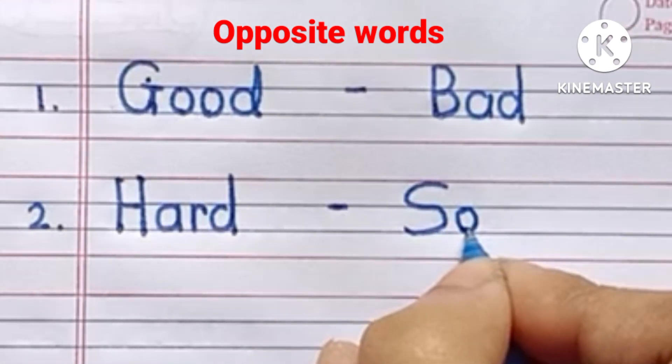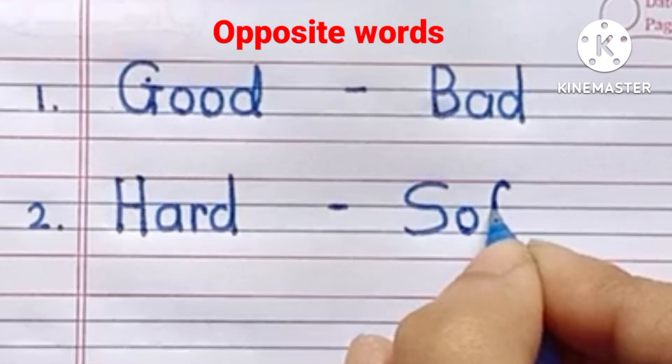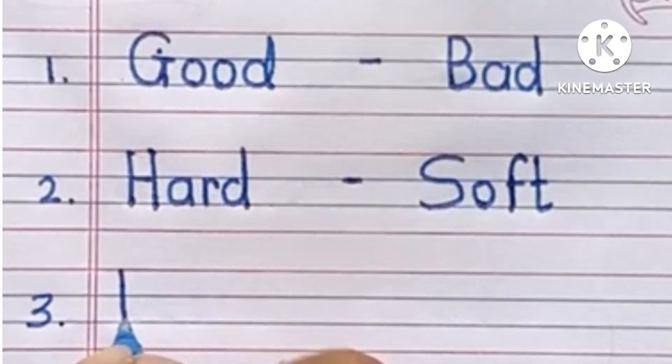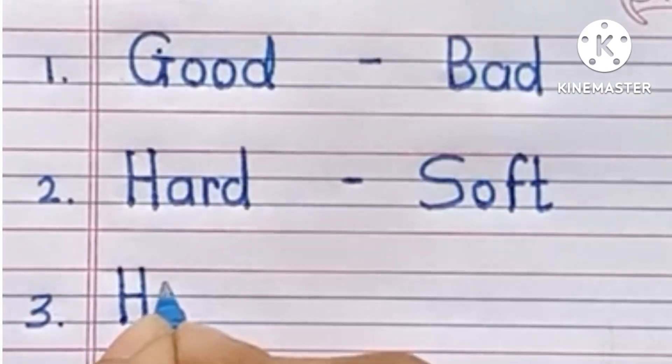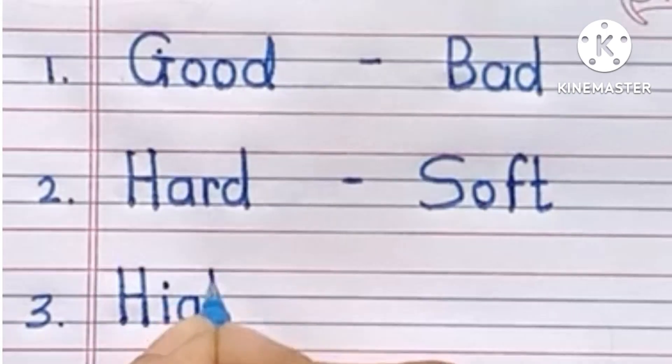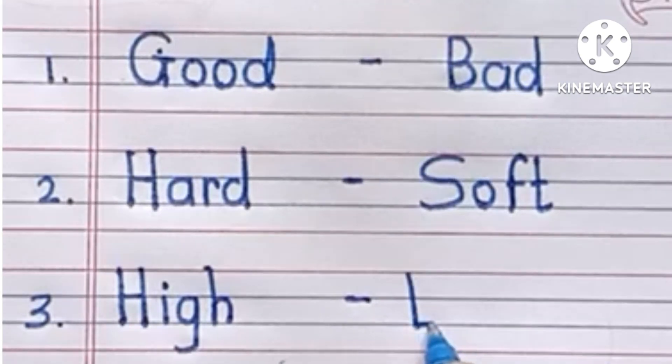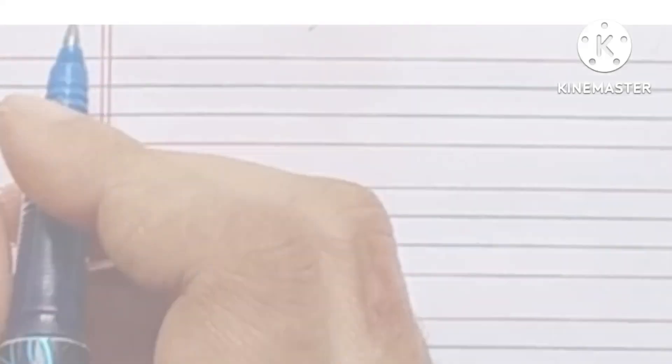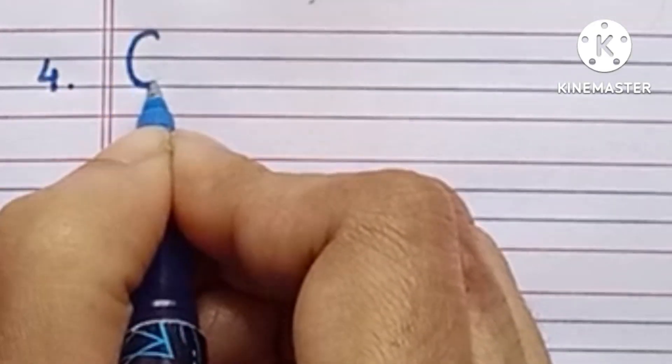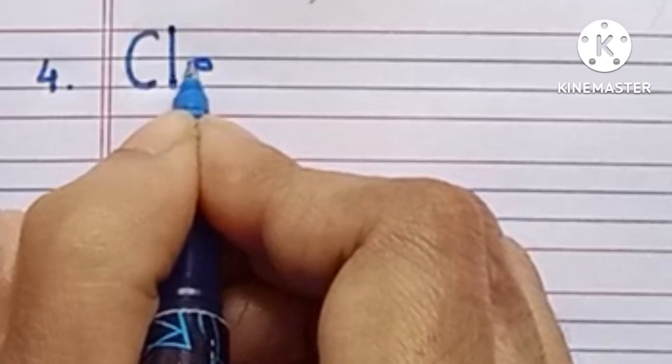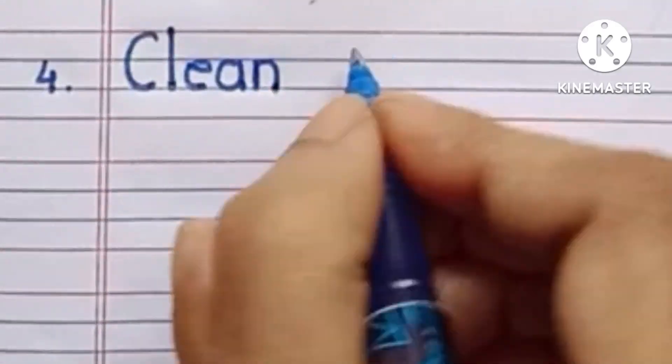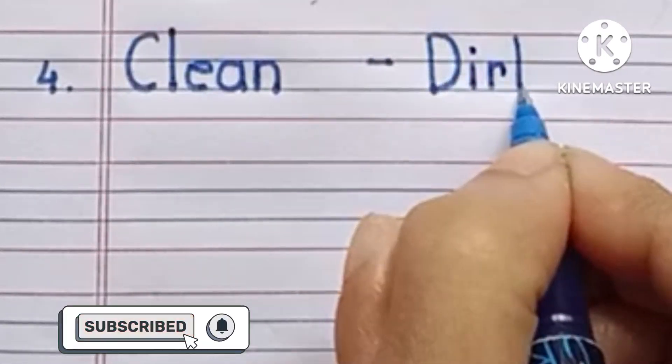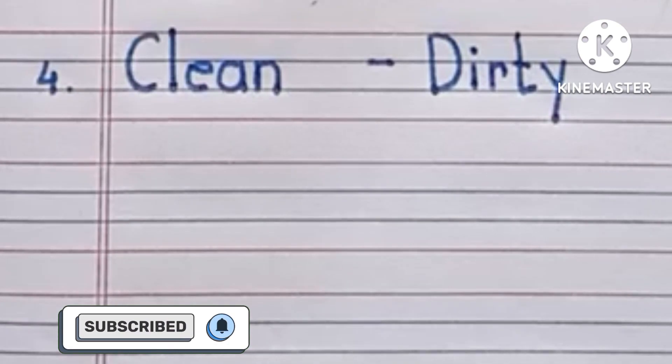S-O-F-T, Soft. Third, H-I-G-H, High. L-O-W, Low. Fourth, C-L-E-A-N, Clean. D-I-R-T-Y, Dirty.